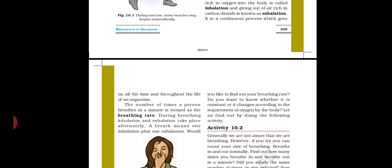The number of times a person breathes in a minute is termed the breathing rate. What is the average breathing rate of a human being? A human being breathes an average of 15 to 18 times in a minute. One person's average breathing rate is 15 to 18 times per minute — we breathe that many times.